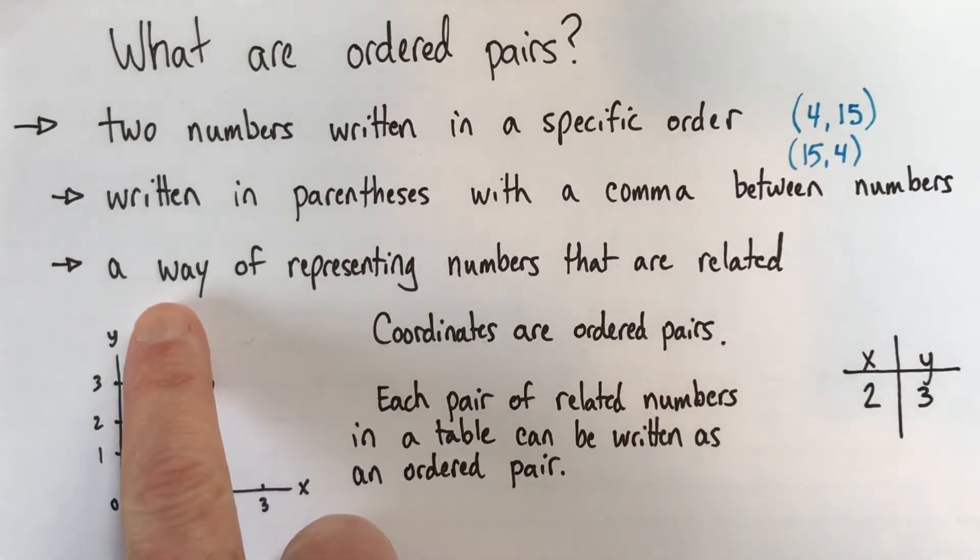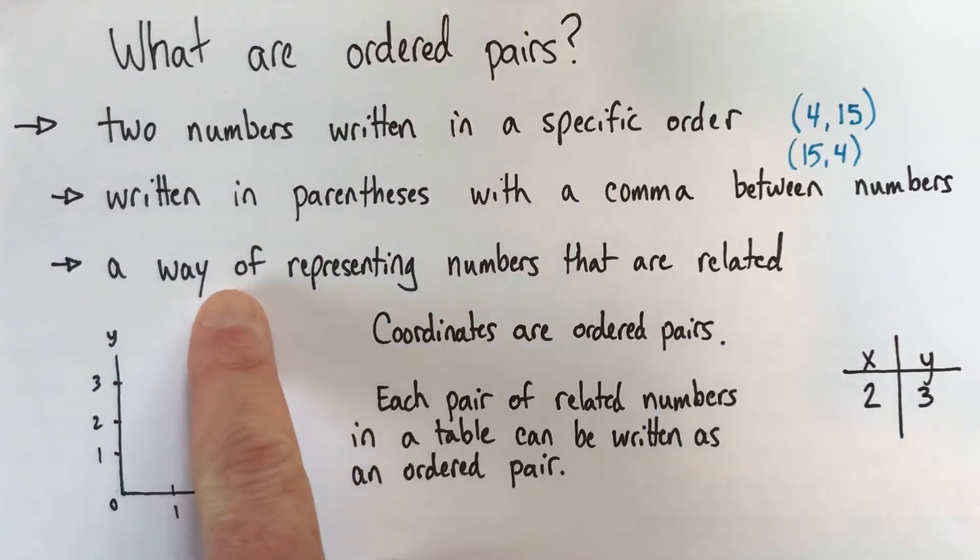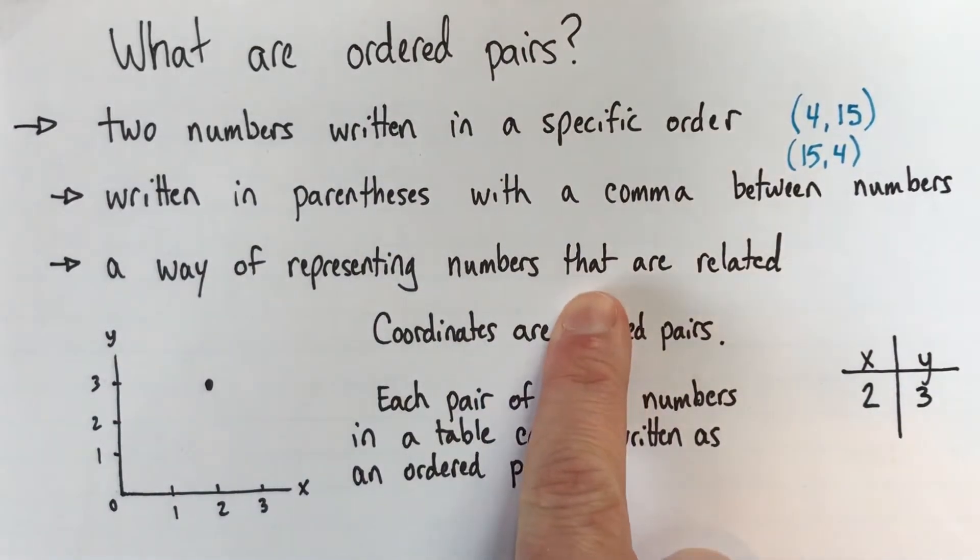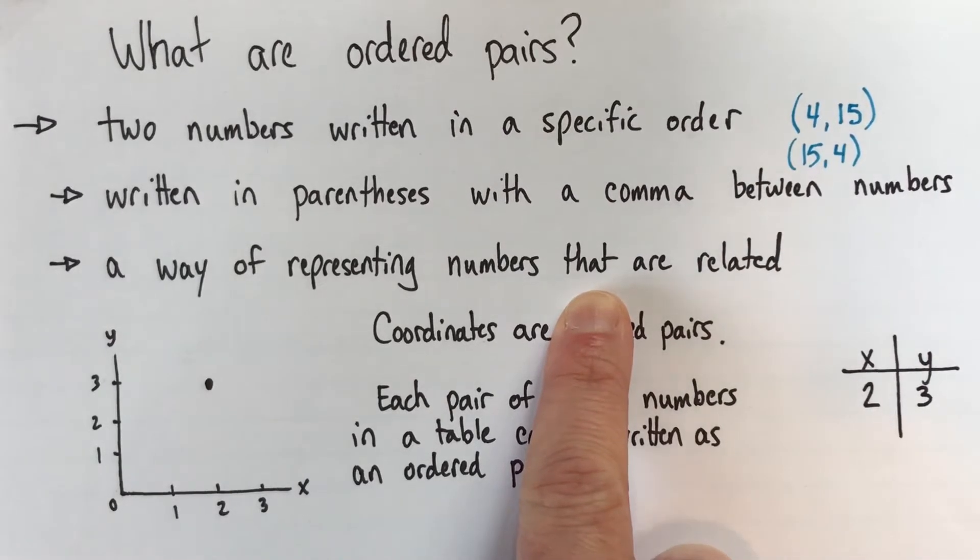So, in terms of more practical use, what are these other than just two numbers? First of all, it's a way of representing numbers that are related. This is why they're useful, because it's sort of a shorthand for showing two numbers that are related.